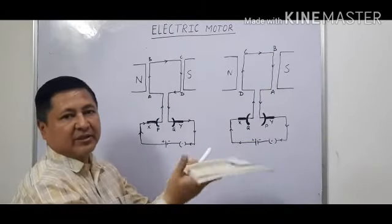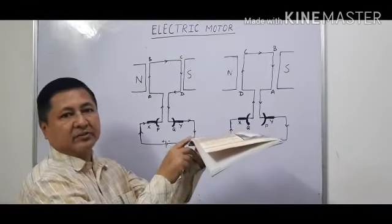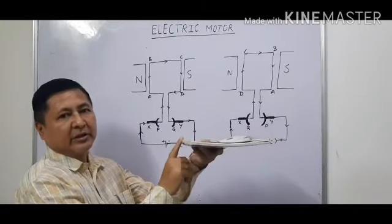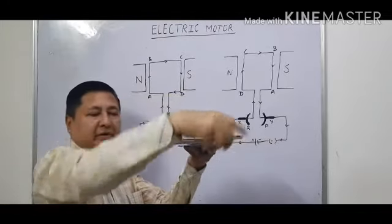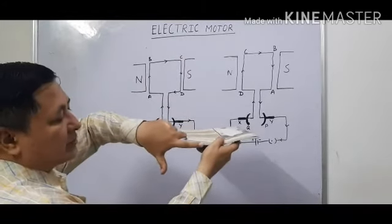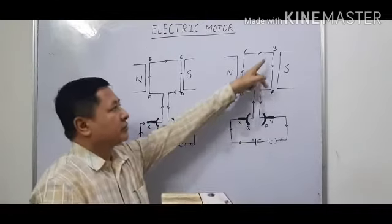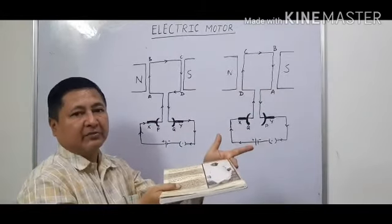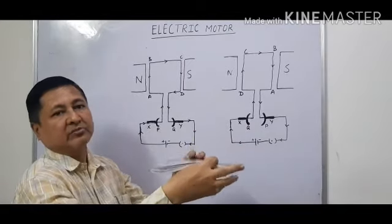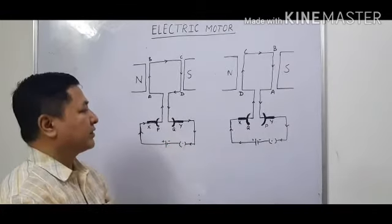Now when the current flows from D to C and from B to A, applying Fleming's left-hand rule again: the DC part will go down, whereas the AB part with current flowing from B to A will go upward. So it takes another turn, completing the full rotation. By this way the coil will continuously rotate, and this rotation is due to the reversal of current by the commutator.